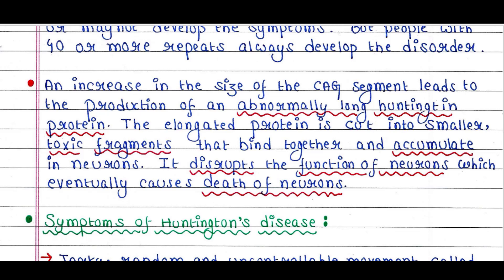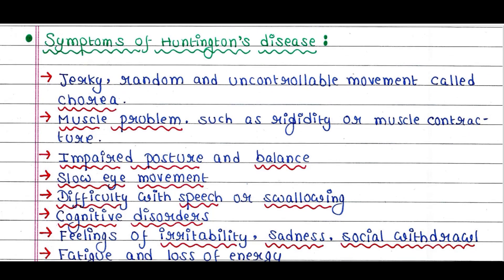Let's see some symptoms of Huntington's disease. Jerky, random, and uncontrollable movement called chorea — hence this disease is also called Huntington's chorea. Muscle problems such as rigidity or muscle contracture, meaning the muscle gets tightened and shortened. Impaired posture and balance, slow eye movement, and difficulty with speech or swallowing.